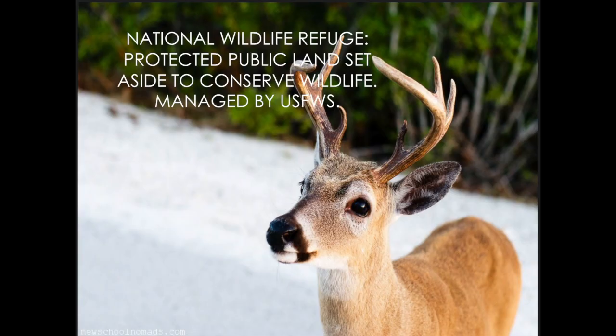Then we have a National Wildlife Refuge. Those of you who may not live near the ocean probably have one of these somewhere. A National Wildlife Refuge is a protected public land set aside to conserve wildlife, and it's actually managed by the United States Fish and Wildlife Service. It's public land set aside with some form of management — maybe managed hunting, limited hunting, or no hunting. An example down here in the Keys is an area in Big Pine where we have land set aside to protect our Key deer, the small deer we have. It's not necessarily ocean-related, but it is a protected area.